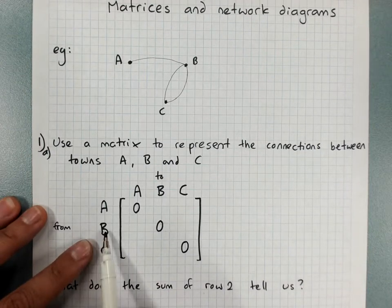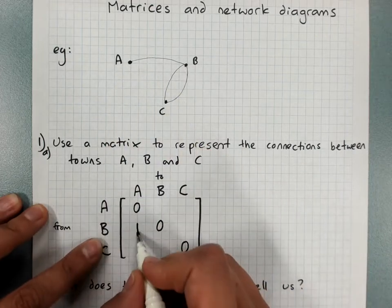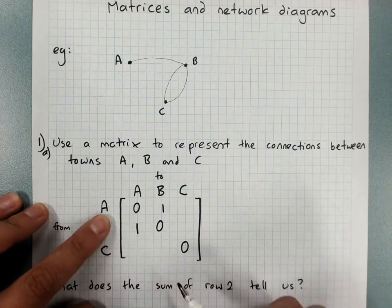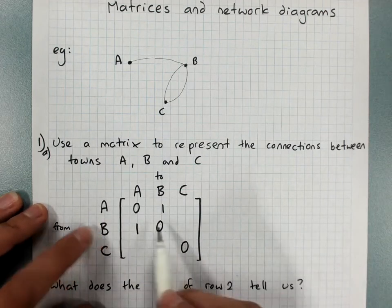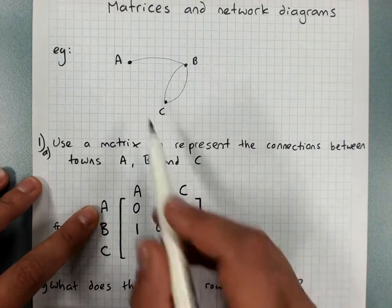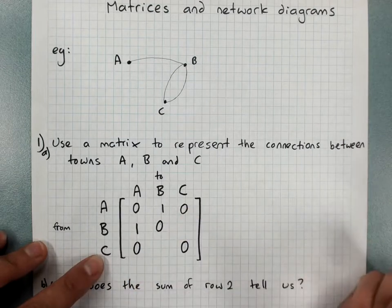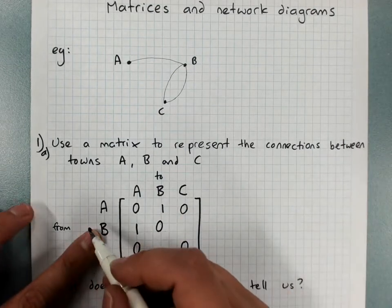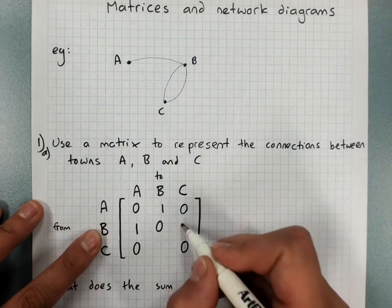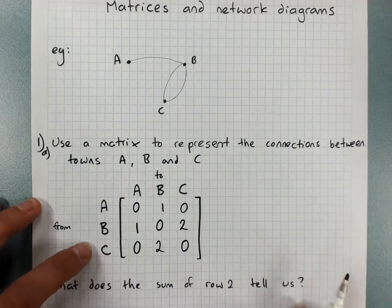So from B to A there's one road, and that means from A to B there's one road. From A to C there's no roads, so from C to A there's no roads. From B to C there's two roads, which means from C to B there's two roads. We've made a matrix.